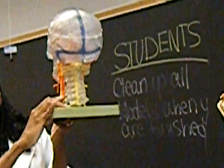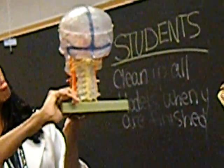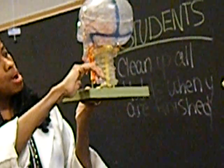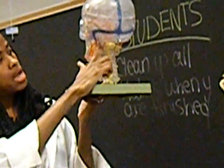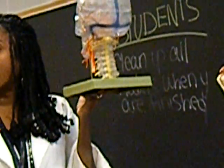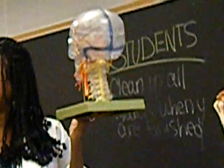And that hole is there for the vertebral artery to run through. You can see your vertebral artery here coming up through the foramen all the way up and then turning and going through the foramen magnum.